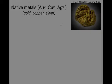Native metals include gold, copper, and silver — aurum, cuprum, argentum — the Latin words, hence the abbreviations for the metals.